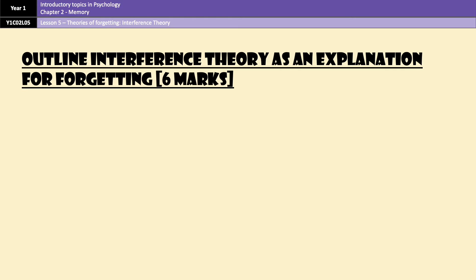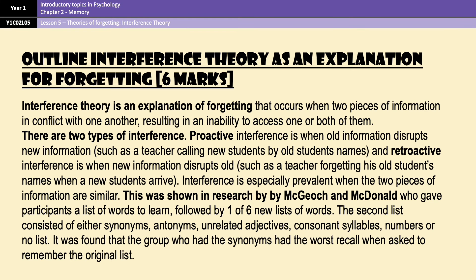That brings us to the end of the theory element of the video. Before moving to evaluation points, let's look at a six-mark outline. It goes through everything step by step: what interference is, what the types are, and then the research. Although you can technically use McGeoch and McDonald as an evaluation point — and if asked to evaluate for three or four marks, by all means use it — for a six-mark outline I'd suggest putting the research in the outline, as otherwise it'll be too short and lack the breadth and depth needed to get the marks.